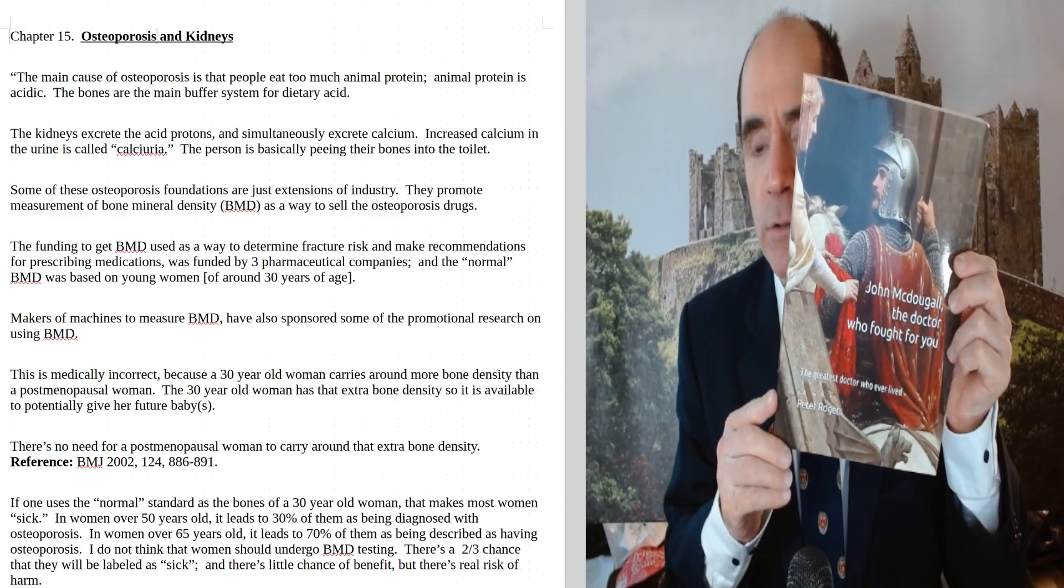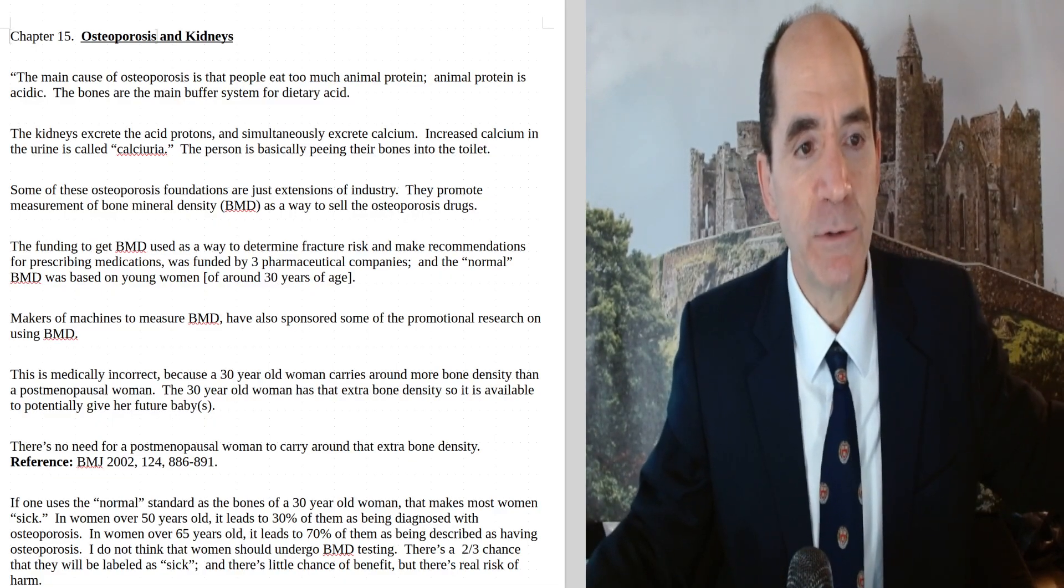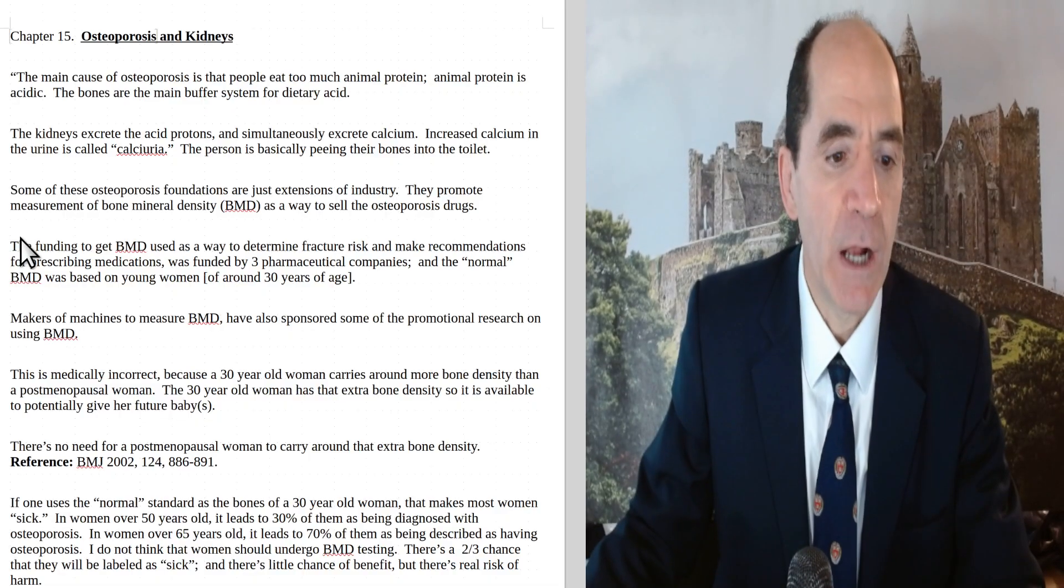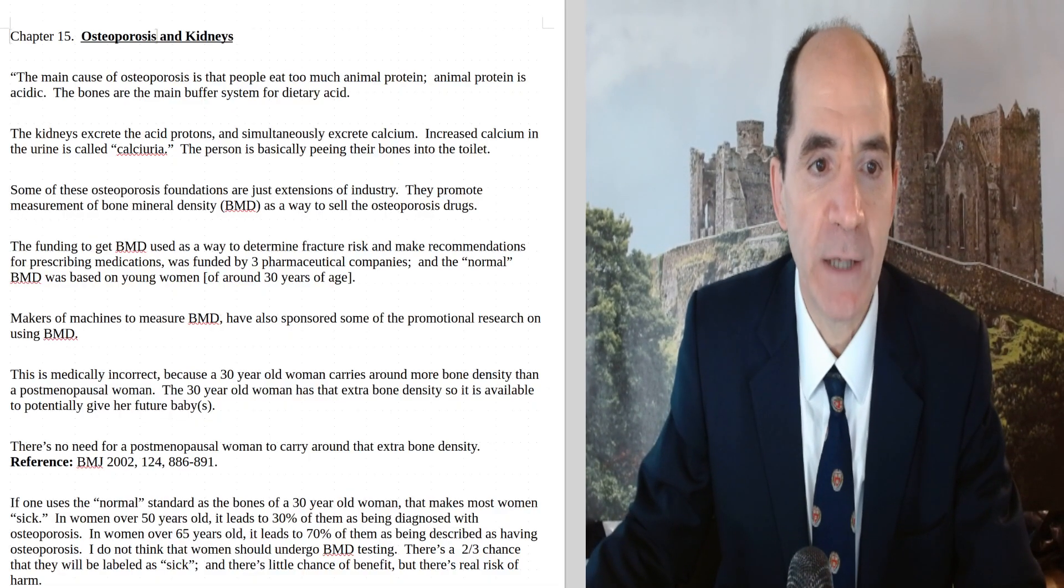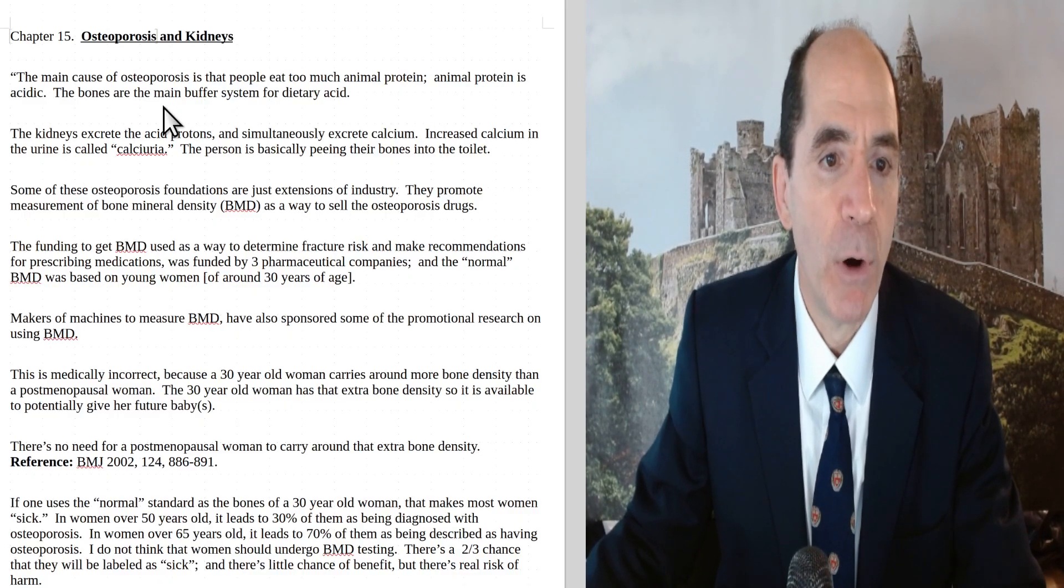This is Chapter 15 from the book Dr. John McDougall, The Doctor Who Fought for You by me, Peter Rogers. We're talking about Chapter 15, Osteoporosis and the Kidneys. Dr. McDougall says the main cause of osteoporosis is that people eat too much animal protein. Animal protein is acidic, and the bones are the main buffer system for dietary acid.